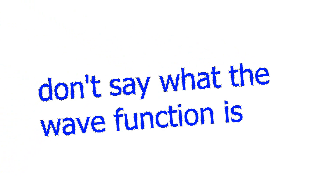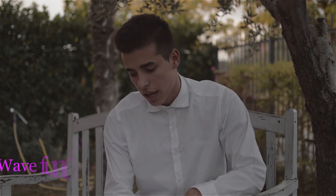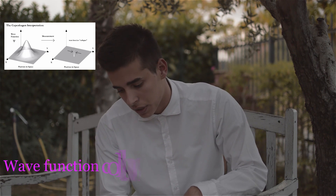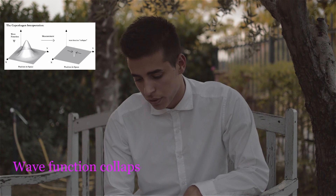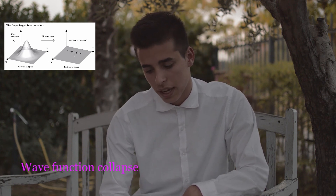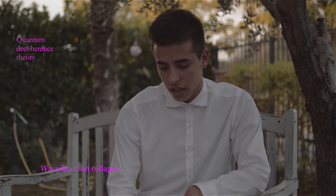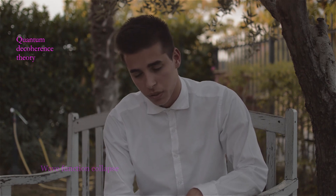The Schrödinger equation provides a way to calculate the wave function of a system and how it changes dynamically in time. However, it does not directly say what exactly the wave function is. Interpretation of quantum mechanics addresses questions such as what the relation is between the wave function, the underlying reality, and the results of experimental measurements. An important aspect is the relationship between the Schrödinger equation and wave function collapse. In the oldest Copenhagen interpretation, particles follow the Schrödinger equation except during wave function collapse, during which they behave entirely differently. The advent of quantum decoherence theory allowed alternative approaches wherein the Schrödinger equation is always satisfied and wave function collapse should be explained as a consequence of the Schrödinger equation.